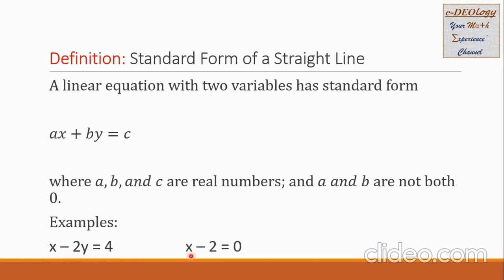Let's have another example: X minus 2 equals 0. We can observe here that there is no Y variable. Let us collect the values for A, B, and C. The A is the coefficient of X and that is 1. There is no variable Y, so the value of B is 0. This negative 2 constant can be transposed to the right side and becomes positive, so the value of C is positive 2.